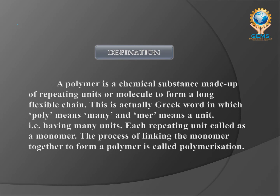Definition of a polymer: A polymer is a chemical substance which is made up of repeating units of molecules to form a long flexible chain. This is actually a Greek word in which 'poly' means many and 'mer' means a unit. So having many units is called a polymer.